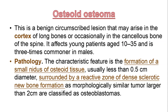Let's get to know another form of bone-forming tumour, which is osteoid osteoma. These are benign, circumscribed lesions that may arise in the cortex of long bones or occasionally in the cancellous bone of the spine. It affects young patients aged 10 to 35 and is three times commoner in males as compared to females.